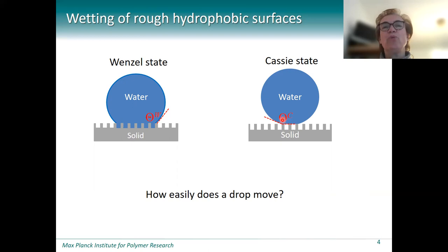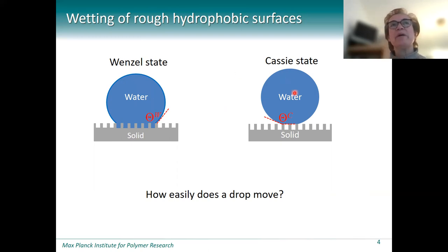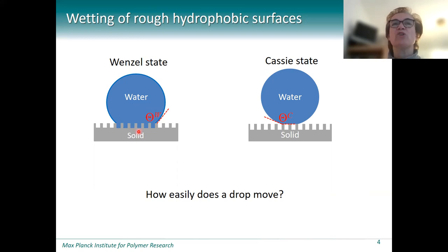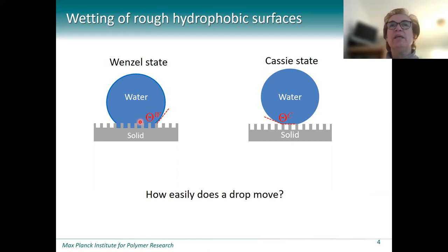The droplet can also sit on top of the asperities. Depending on the situation — whether we have full wetting, we say the droplet is in the Wenzel state; if the droplet rests on top of the asperities, we say the droplet is in the Cassie state. As you can imagine, depending on the interaction between the droplet and the substrate, the ease of motion greatly differs, and this ease of motion is a measure of the friction force.